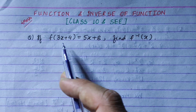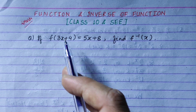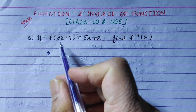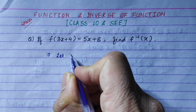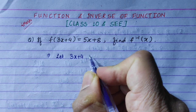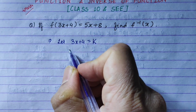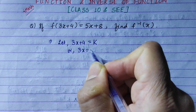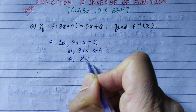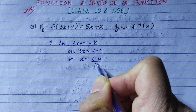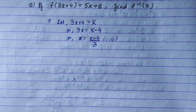Now we will simply find f(x). We have f(3x + 4). Now we will generalize by giving x to the binomials. Let 3x + 4 equal to k. Now we will solve for x: 3x equals k minus 4, or x equals (k minus 4) upon 3. This will be equation 1.